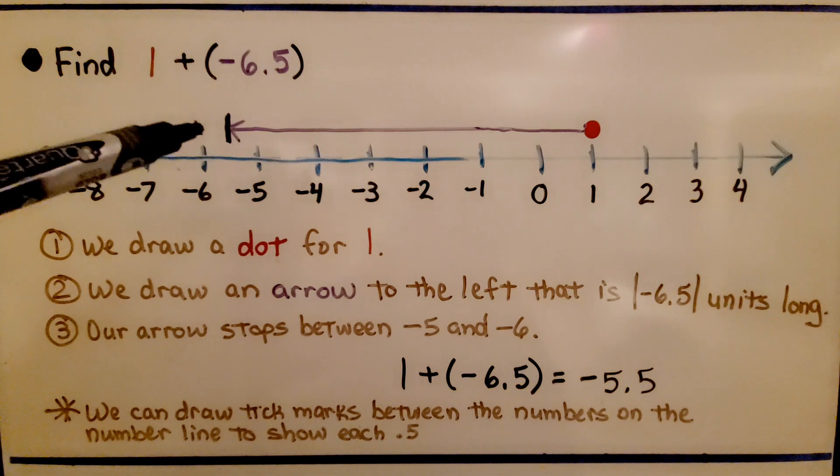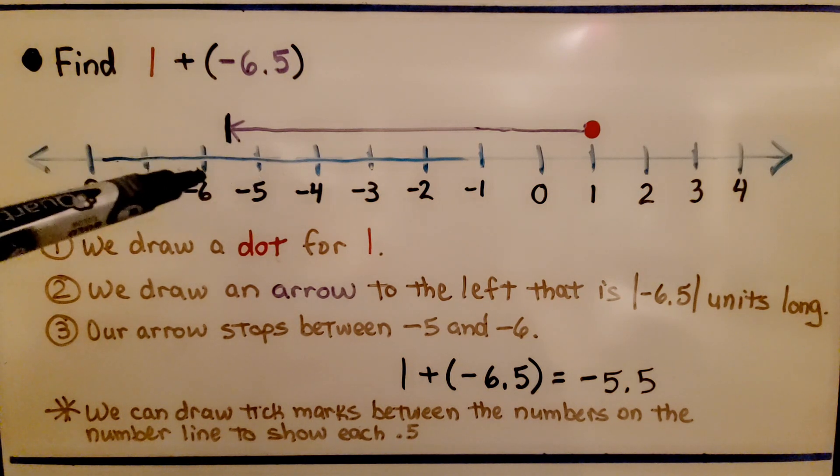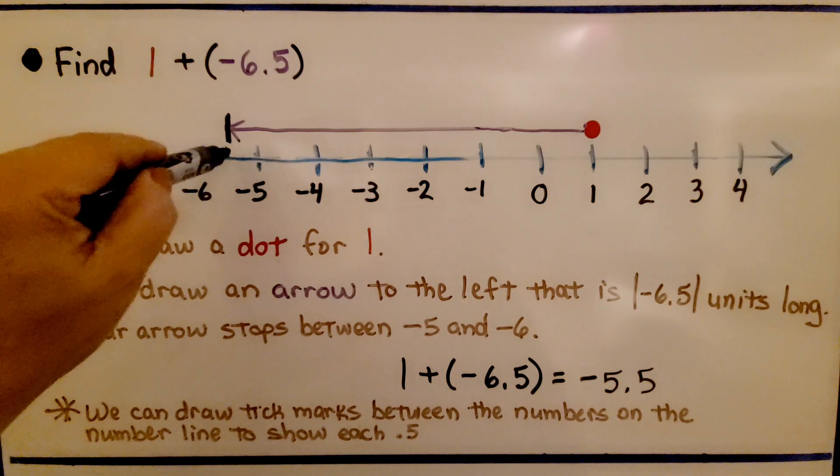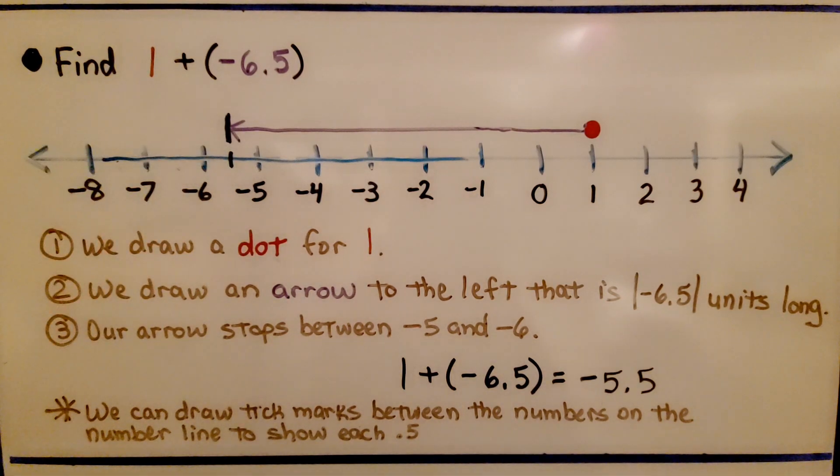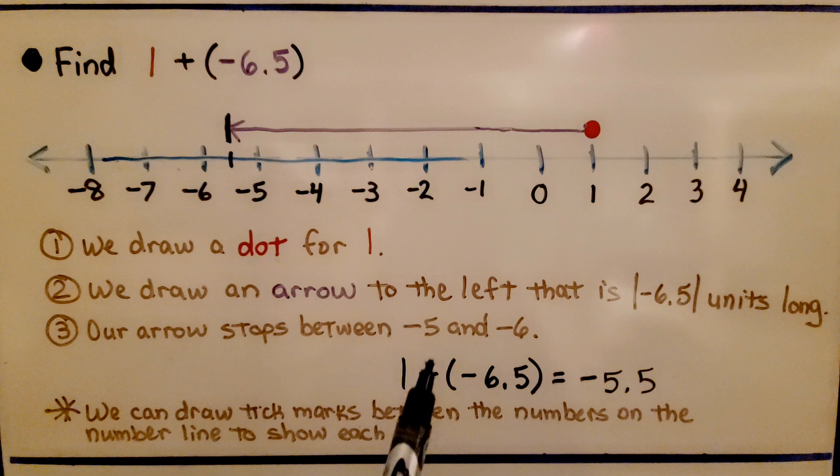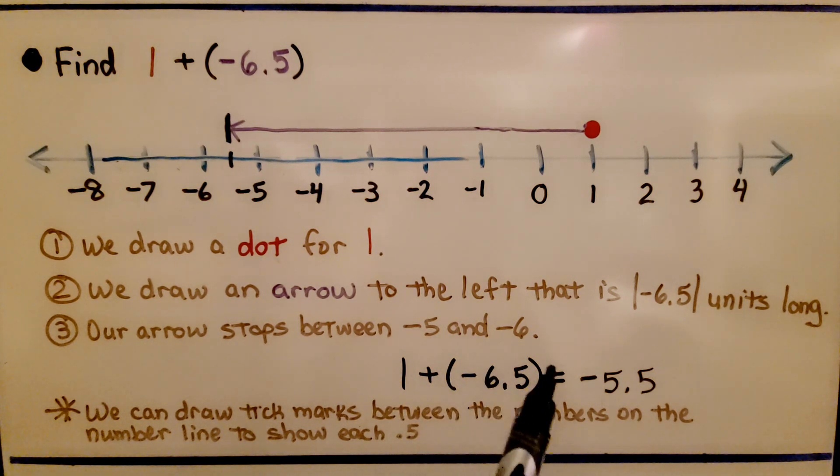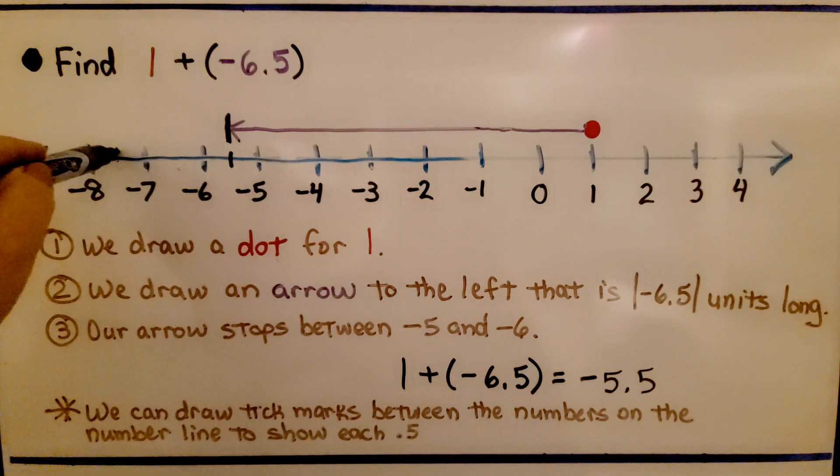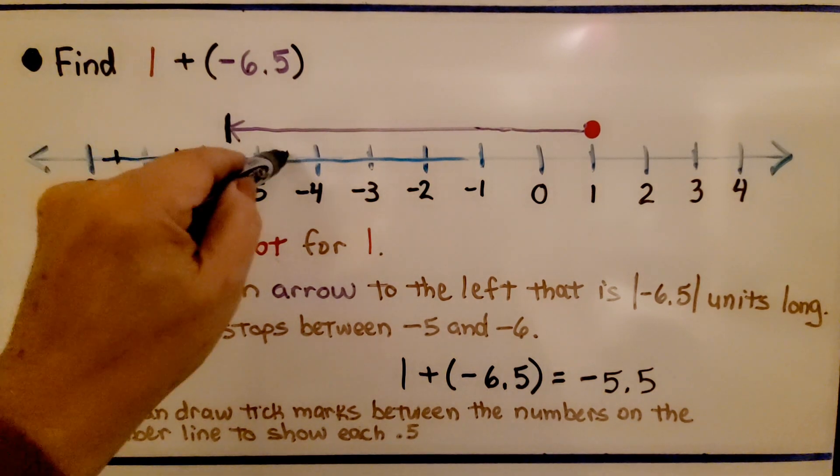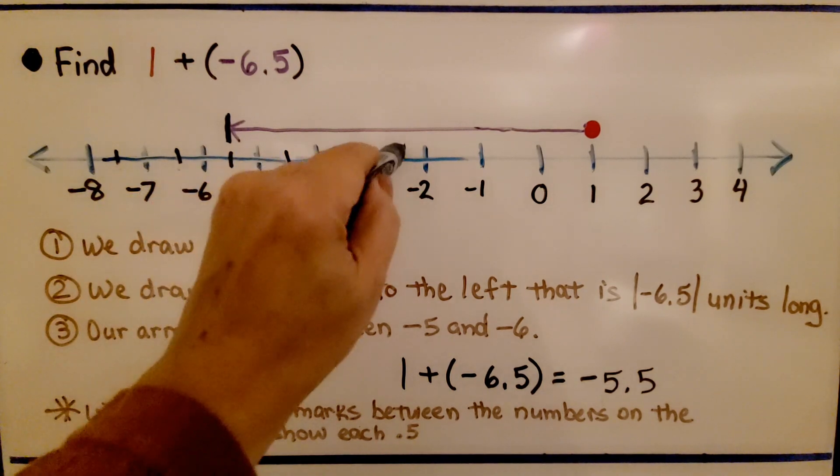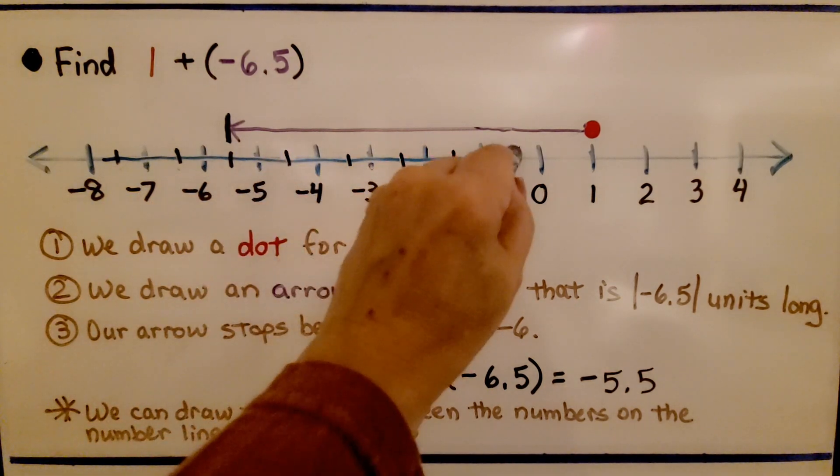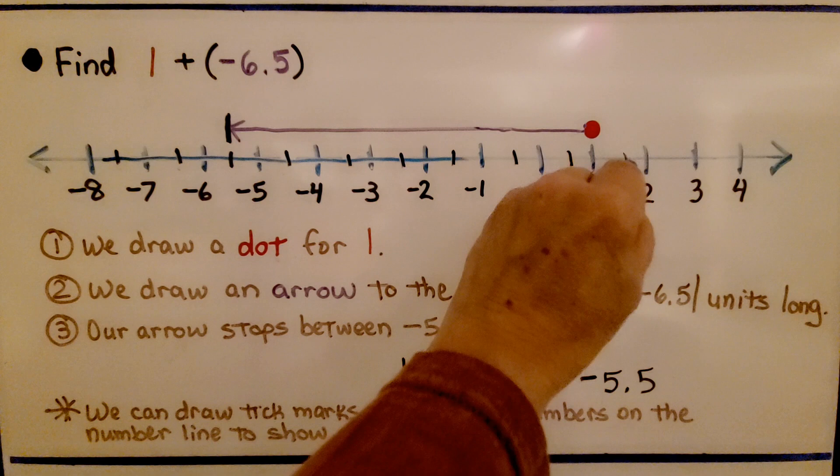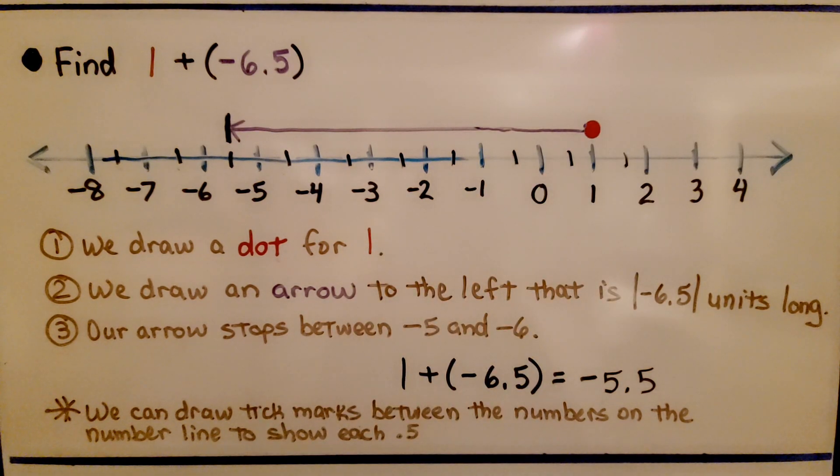Our arrow stops between negative 5 and negative 6 for negative 5.5. We know that 1 plus negative 6.5 is equal to negative 5.5. And we can draw tick marks between the whole numbers, between each integer, if that's going to help us find the 5 tenths.